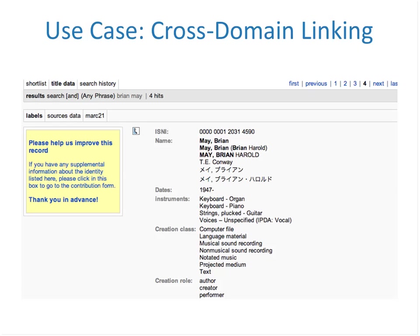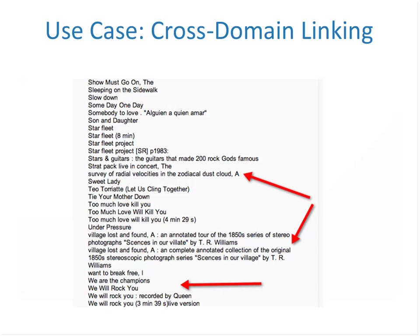Another very valuable use case is cross-domain linking. ISNI serves as a bridge identifier between multiple data sets. Consider someone like Brian May, who is a very multi-talented person with information in a multitude of data sets. Looking at all of his contributions, you see he has an astrophysics dissertation, a collection of stereoscopic photographs — because he collects them and is an expert in that field — and he also happens to be the guitarist for the rock band Queen. If you want comprehensive information about Brian May across multiple datasets, ISNI is a great way of connecting all this disparate data into a single environment.